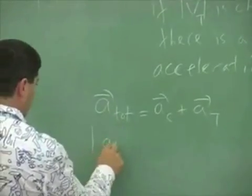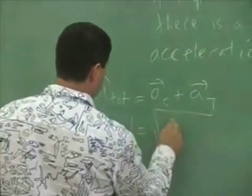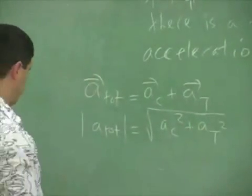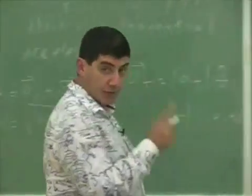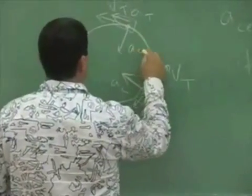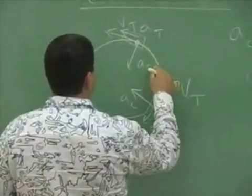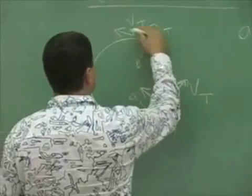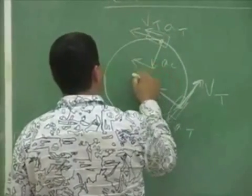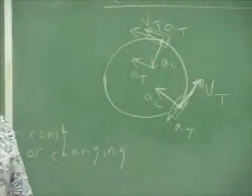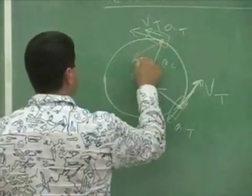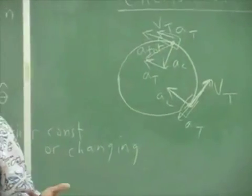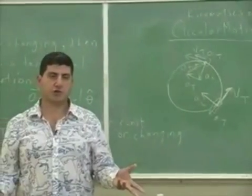The magnitude of a_total equals the square root of a_centripetal squared plus a_tangential squared. Visually: a_centripetal points toward the center; if you're speeding up, a_tangential is in the same direction as v_tangential. Adding a_tangential at the tip of the a_centripetal vector gives the a_total vector.